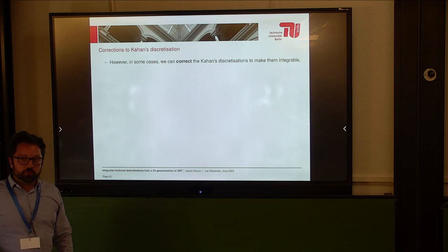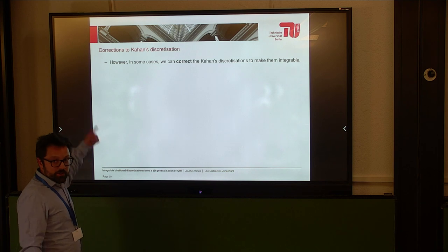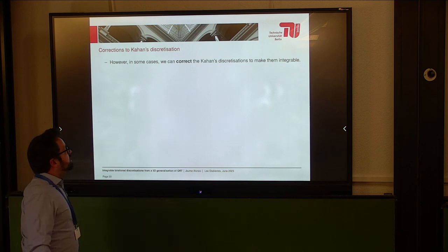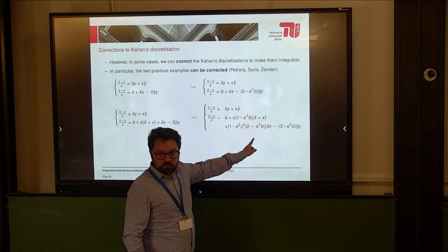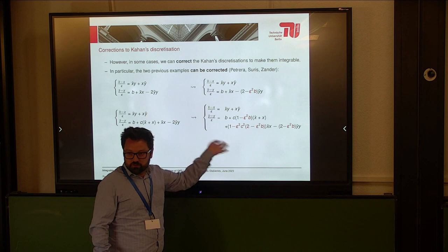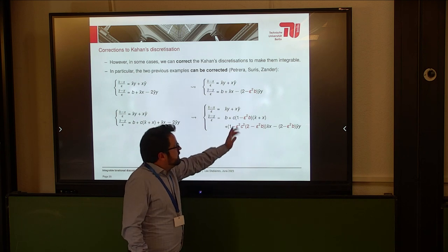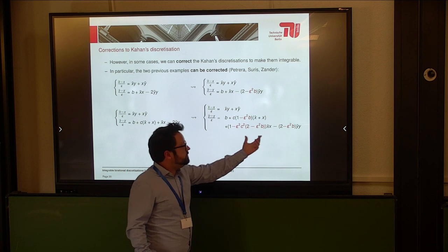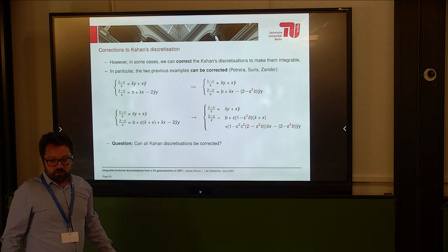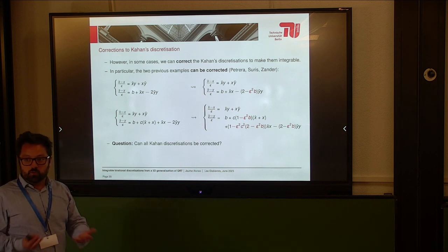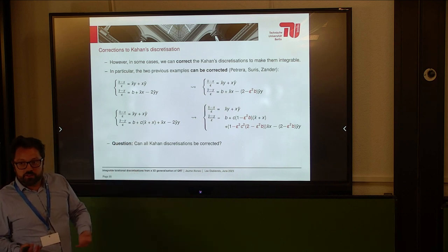But then came the second wave of hope: in some cases — exactly these two cases, where one is a particular case of the other — we can correct the Kahan discretization. We can add some terms that depend on the time step, so I don't violate the first condition: when epsilon goes to zero, I still recover the original system. I can modify the way I discretize so that the result has a conserved quantity. This raised the question: can all Kahan discretizations — all the non-integrable ones from the list — be corrected to be made integrable?